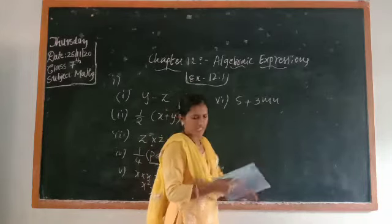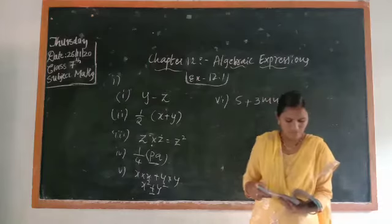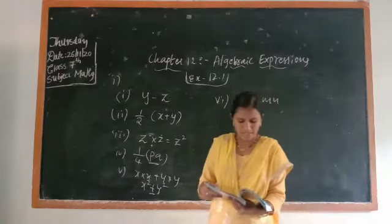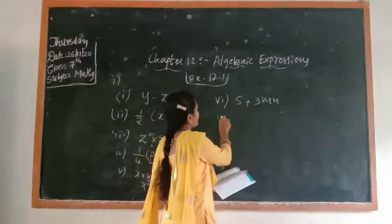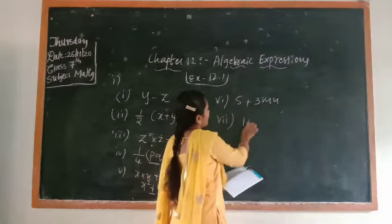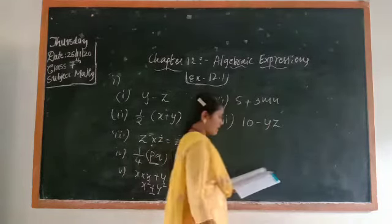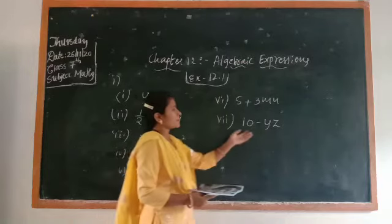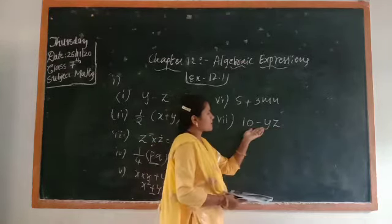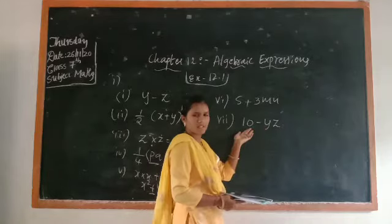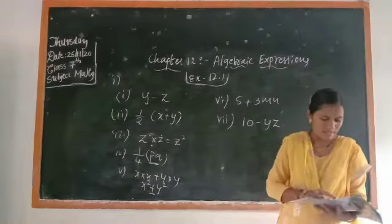Next: product of numbers y and z subtracted from ten. Subtracted from ten means you take ten minus yz. 'From' means you take minus. So the expression is 10 − yz.